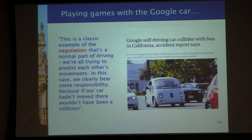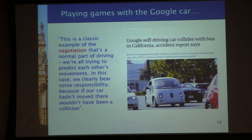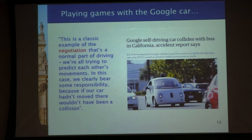If you think this game-theoretic point of view is far-fetched, here is what Google actually said in response to another accident. There was a minor accident where the Google car collided with a bus, and for the first time Google admitted it was their fault — all other crashes before were the fault of the human drivers, not the Google car. At that point, Google recognised that you do need this kind of negotiation — you need to consider the situation from the game perspective. That's why I'm focusing on this model.